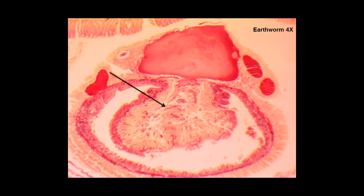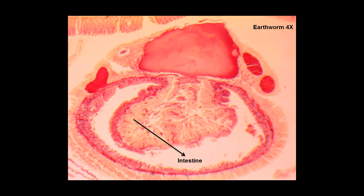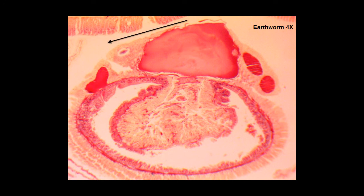What is the name of this structure? The typhlosole. What am I pointing at here? This is the cavity or lumen of the intestine. What is the name of this structure? This is the dorsal blood vessel. What is the name of this cavity that surrounds the digestive tract? The cavity is called the coelom.